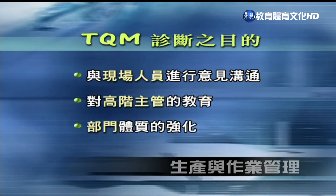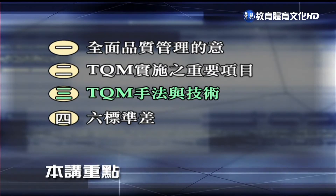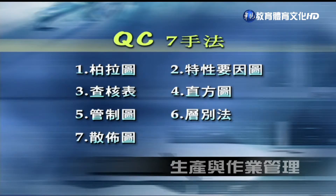谢谢张老师说明TQM实施的重要项目。接下来说明TQM的手法及技术。TQM在实施活动过程当中，除了理念概念外，也需要工具方法来做实践。第一个常应用的手法就是QC七大手法，包含柏拉图、特性要因图、查核表、直方图、管制图、层别法、散布图等七大工具，这些工具应该要交互使用，属于很基本的工具。